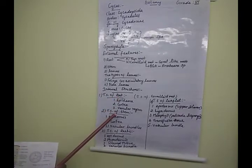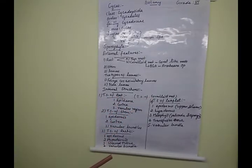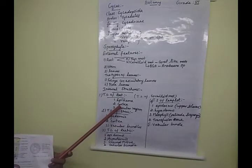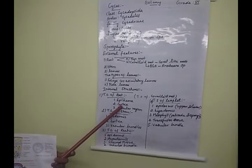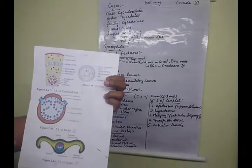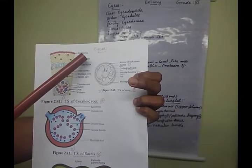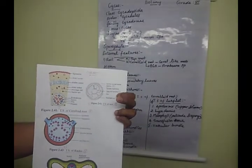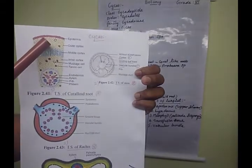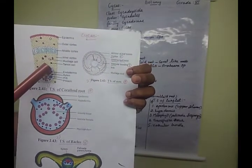First is the transverse section of the coralloid root. If we take a TS of the coralloid root, it shows the following parts: the first layer is the epiblema, then cortex, and then the vascular tissues or vascular region. The outermost layer of the root is called the epiblema.